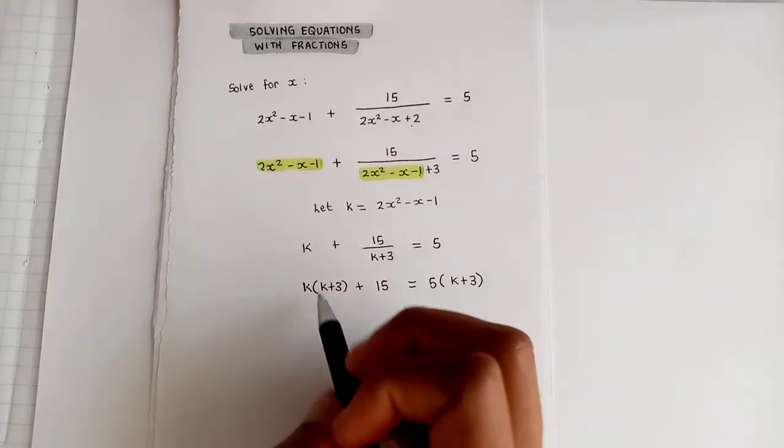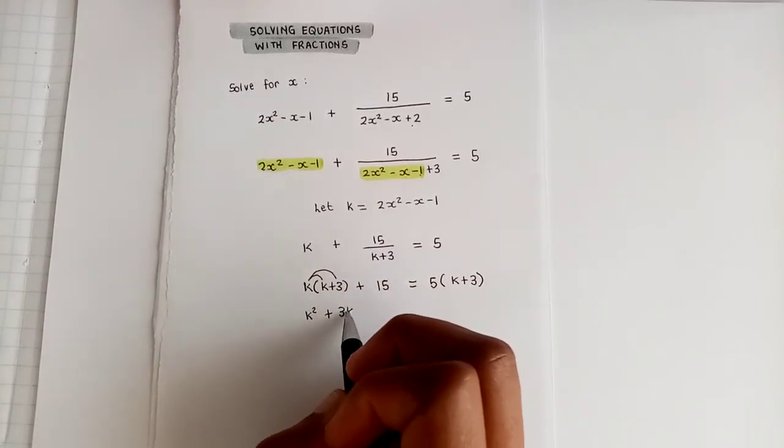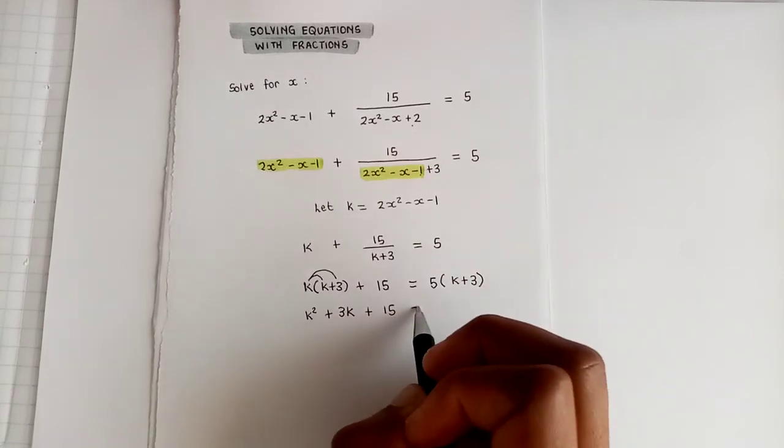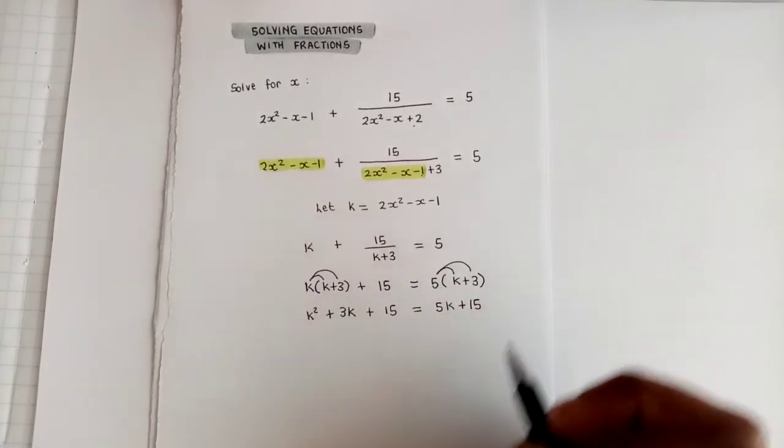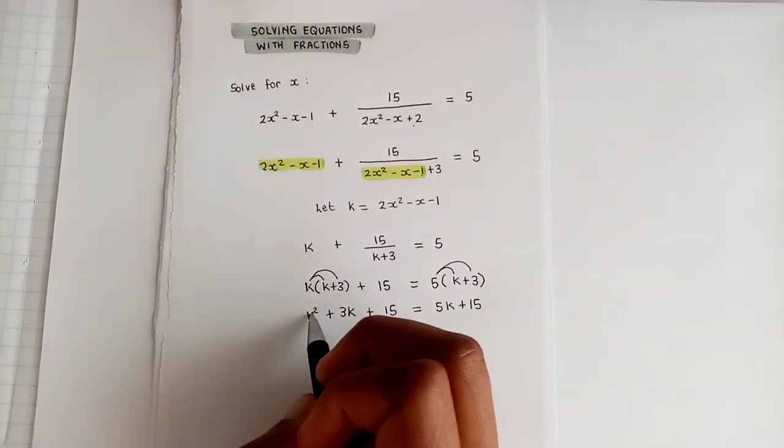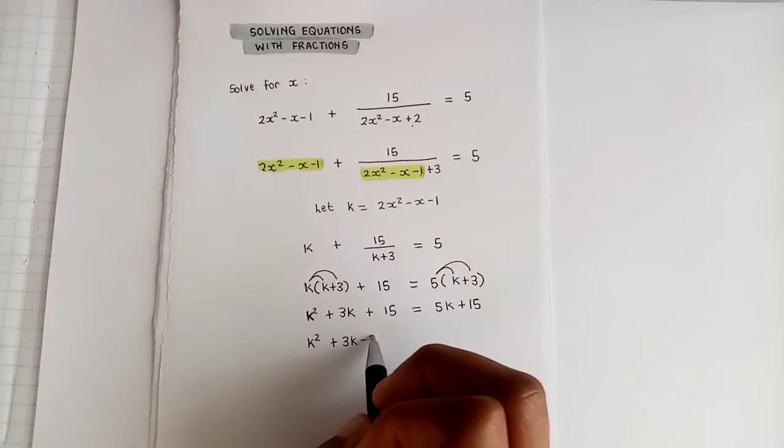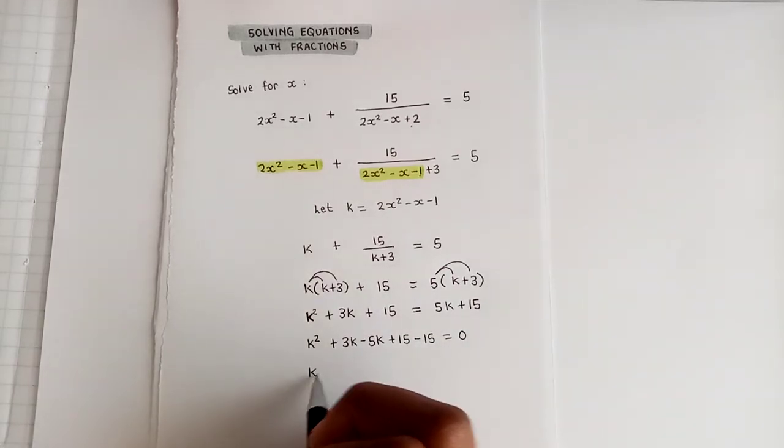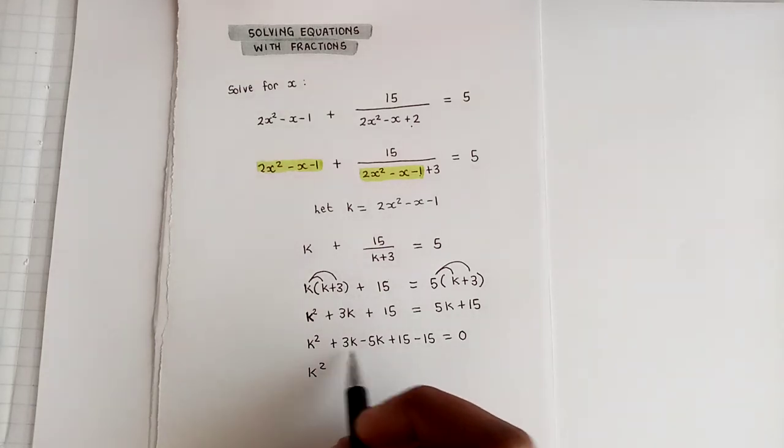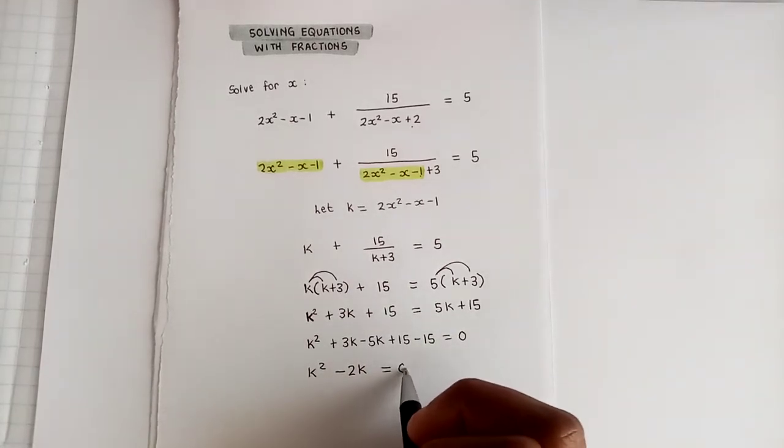All right, now we can open up some of these brackets. So we're going to have a k times k to give us k², a k times 3 to give us a 3k, and then we have a plus 15, and then on the other side we're going to have a 5 times k to give us 5k, and 5 times 3 to give us 15. Okay, collecting like terms here and also moving everything over so that we have a zero on one side, since we have a quadratic that needs to be solved. We're going to move everything to the left side. We're going to have k² + 3k - 5k + 15 - 15 equals zero. Then simplifying, we'll get k² + 3k - 5k is a -2k, and then positive 15 - 15 is obviously zero.